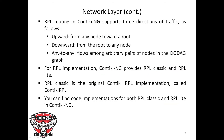RPL routing in ContikiNG supports three directions of traffic: upward from any node toward the root node, downward from the root to any node, and any-to-any. For upward traffic, we have multipoint-to-point. For downward, point-to-multipoint. And any-to-any can be referred to as point-to-point or peer-to-peer, occurring among arbitrary pairs of nodes in the DODAG graph.